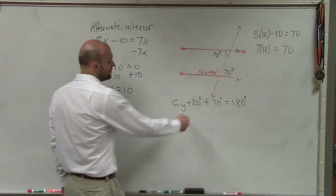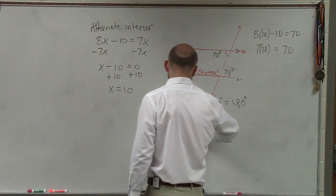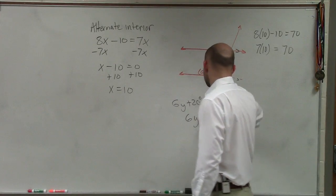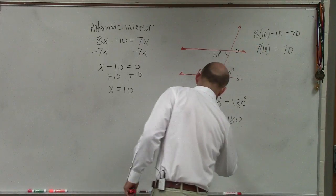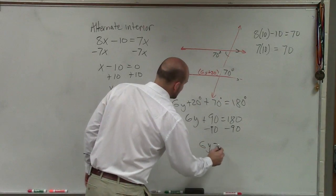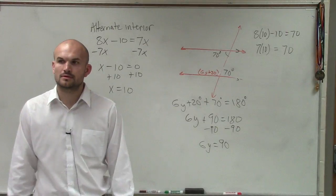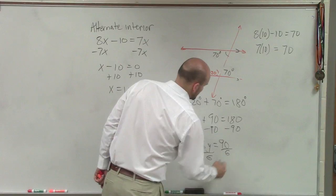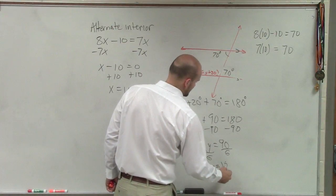All right, so now we can just go ahead and solve. So this becomes 6y equals 90. I'm sorry, 6y plus 90 equals 180. Subtract 90 degrees. So therefore, I have 6y equals 90. And therefore, divide by 6, y equals 15.